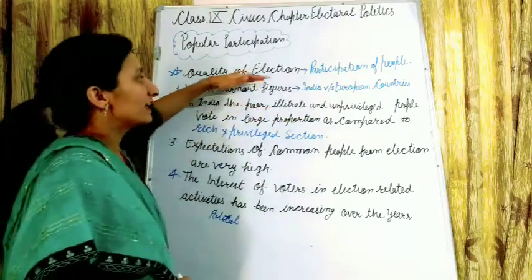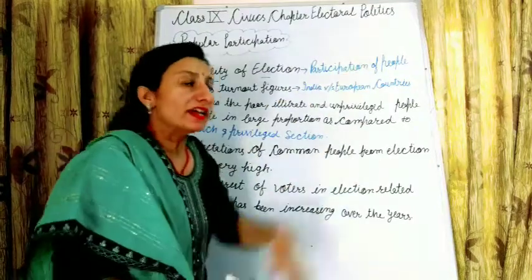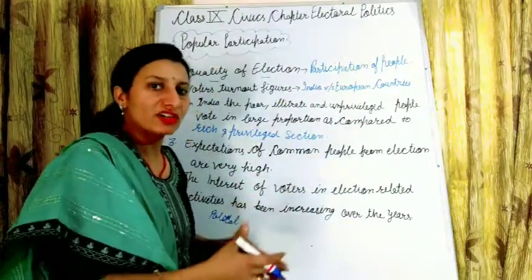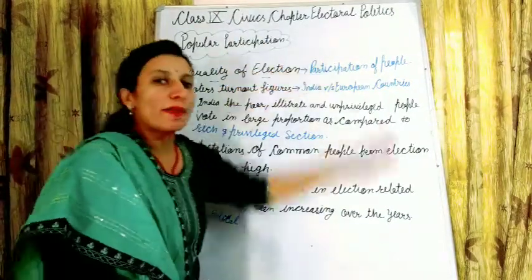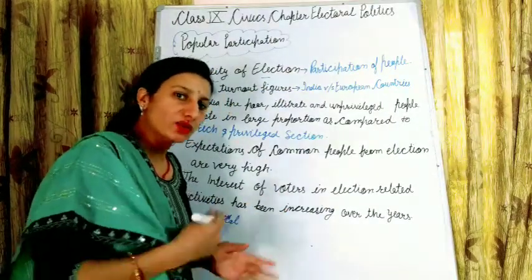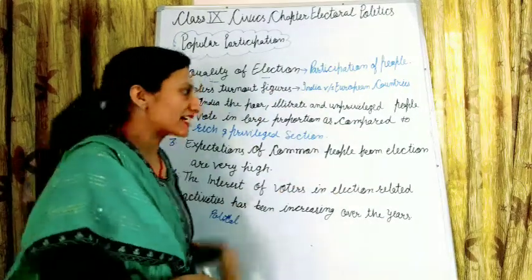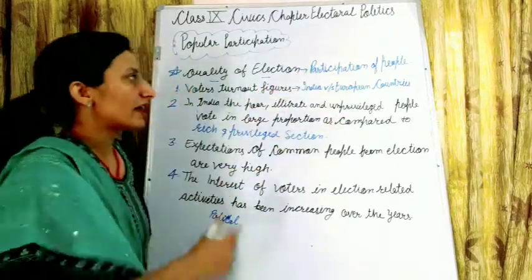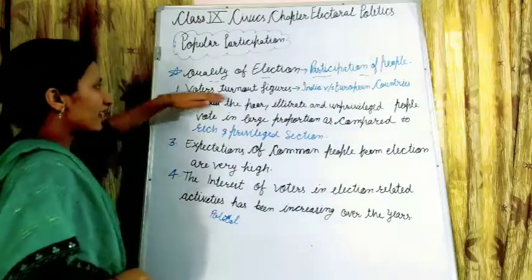This means the quality of elections depends on the participation of the people — the more people participate, the better the quality of the election. In popular participation, people's participation should be maximum. In India, people are largely involved, though there are different reasons behind it, which we will discuss. Next is voter turnout figures: India versus European countries.